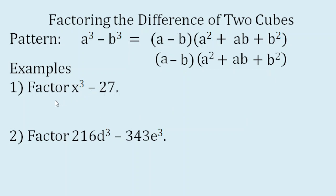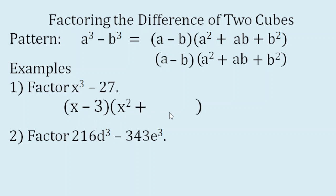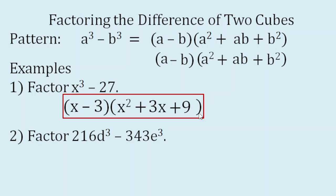Let's factor X cubed minus 27. The cube root of X cubed is X, and the cube root of negative 27 is 3, so that's X minus 3. For the trinomial factor: X times X is X squared. Because this is a minus sign, it will be followed by a plus sign. Then multiply X times 3 — that's 3X. The last term: square 3 — 3 times 3 is 9. So these are the factors: the quantity X minus 3 times the quantity X squared plus 3X plus 9.